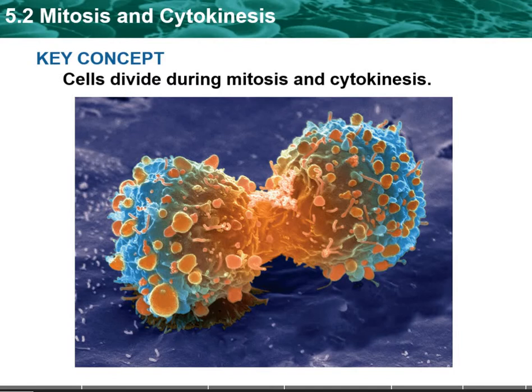In 5-2, we're going to be looking at the process of mitosis and cytokinesis. There's a lot of things that happen in this part of the cell's life, but it is really just a small fraction of the cell's life. It only spends about 10% of its life in mitosis and cytokinesis. The other 90%, it's going to be in what's known as interphase, which was the G1, S, and G2 phase of the cell's life. The M phase is only about 10% of the cell's life.